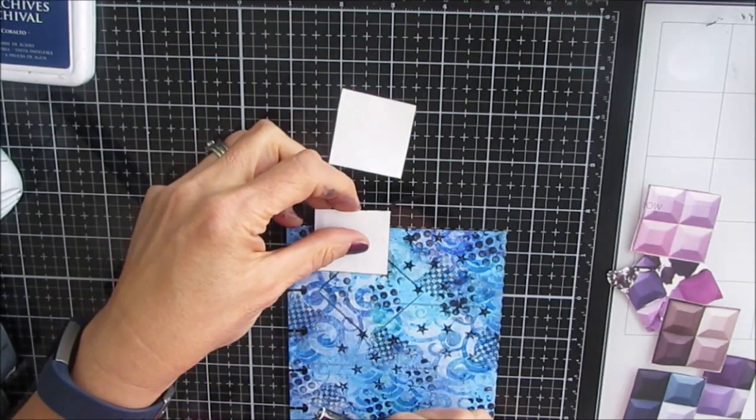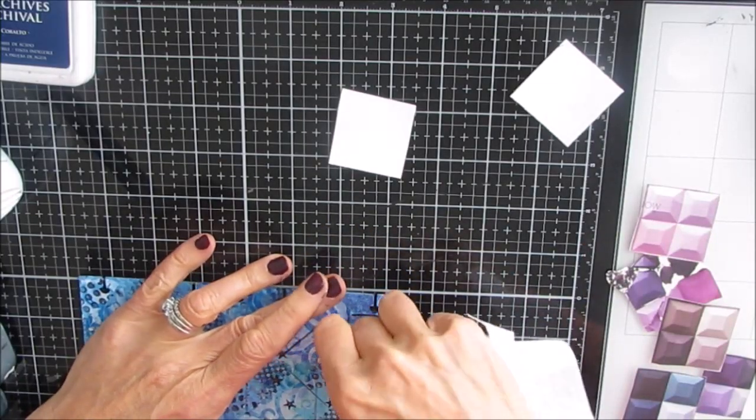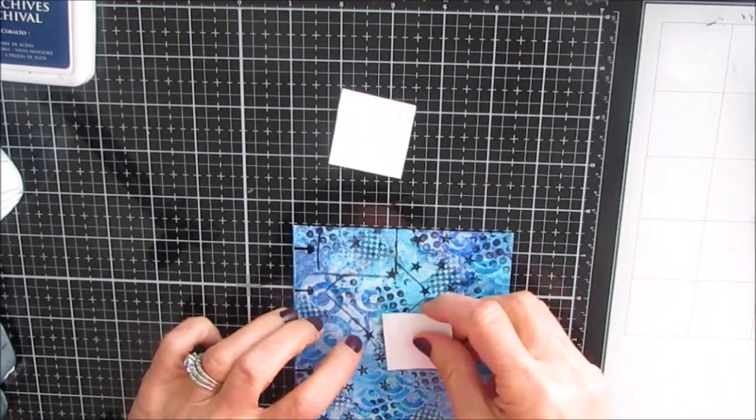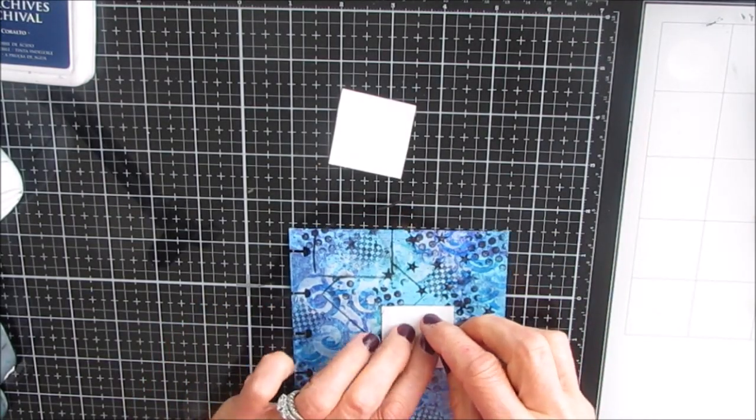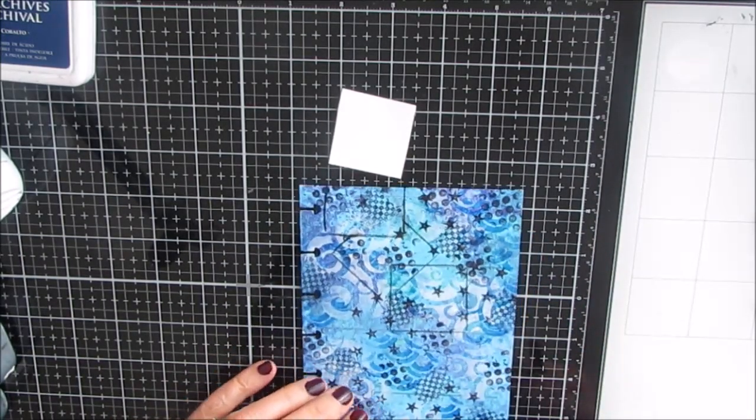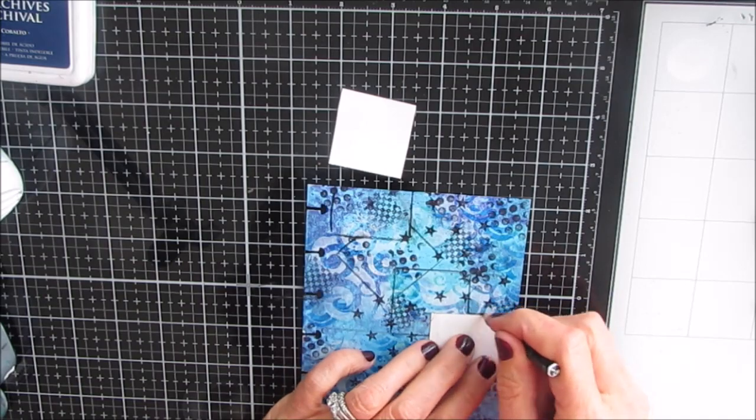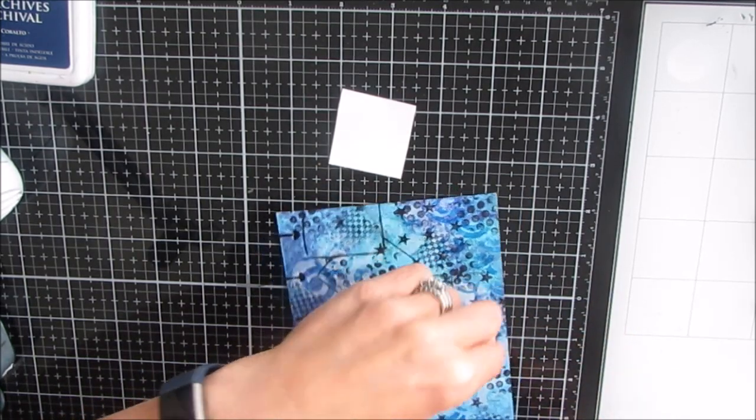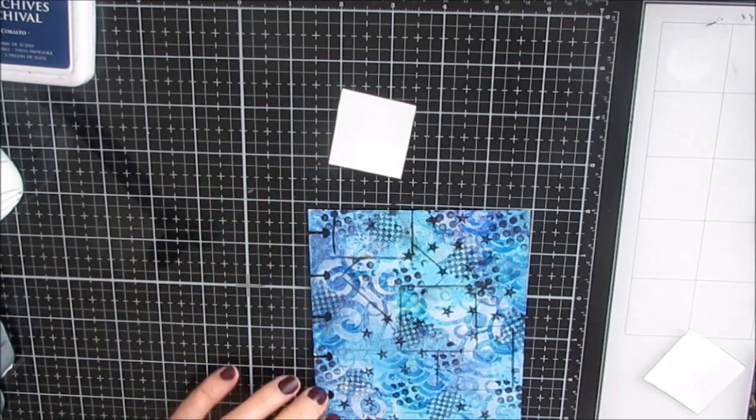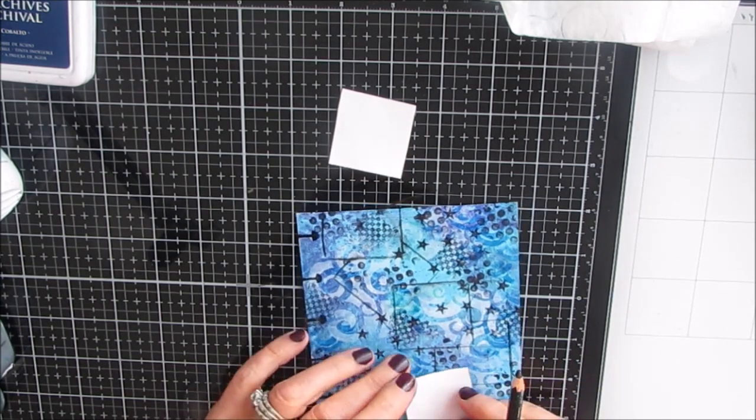Now I'm tracing this with Stabilo All Pencil and I'm deciding which one is going on top of which one, and then I'm getting rid of the excess Stabilo All Pencil with a baby wipe because this is going to be overlapped. I want this to look like the tiles are on top of each other to give it more of a 3D look.